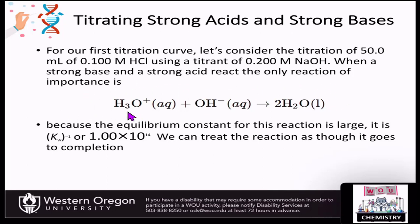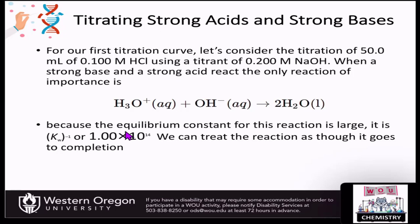In this first reaction, we're going to think about titrating a strong acid with a strong base — H3O⁺ with OH⁻ — and that's going to produce water. We're using hydrochloric acid as the acid component and sodium hydroxide as the titrant: a 0.1 molar solution of HCl and a 0.2 molar solution of NaOH. When a strong base reacts with a strong acid, it goes essentially to completion because we have a very large equilibrium constant.